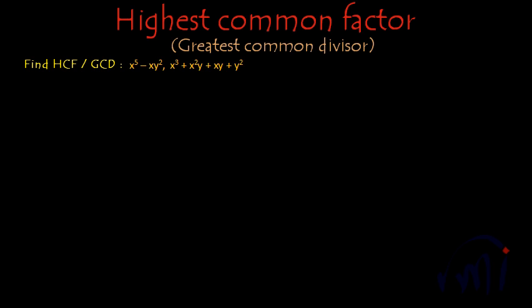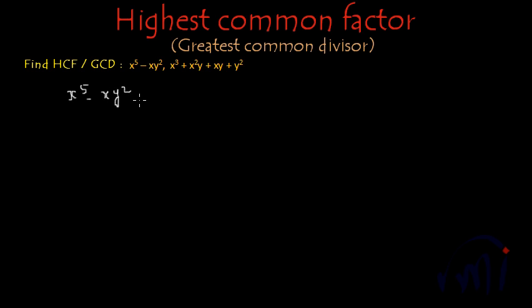Hi, so we have one more example and in this example we have to find the highest common factors of x to the power 5 minus xy squared and x cubed plus x squared y plus xy plus y squared. So what we do first, we will take the first expression which is x to the power 5 minus xy squared and then we will factorize this.